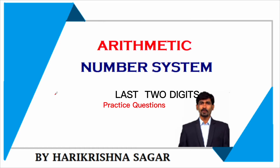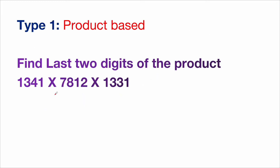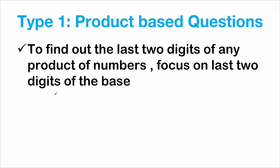We'll discuss the simple topic of last two digits. Last two digits questions are given in two patterns: one is product-based and the other is power-based. In product-based questions, you are given a product of few numbers and asked to find the last two digits of the result. In power-based questions, you are given a power and asked to find the last two digits of the overall result. These are the two types of questions under last two digits.